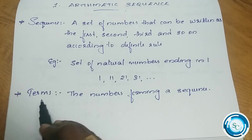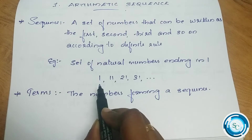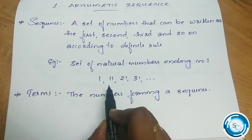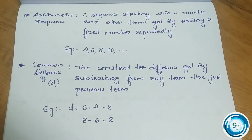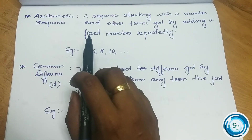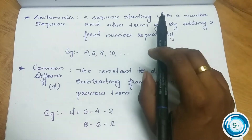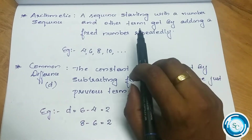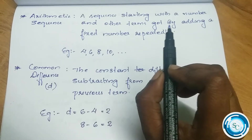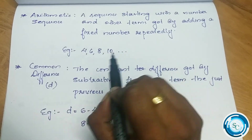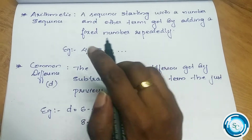The numbers in a sequence are called terms. An arithmetic sequence is a sequence starting with a number where the other terms are obtained by adding a fixed number repeatedly.